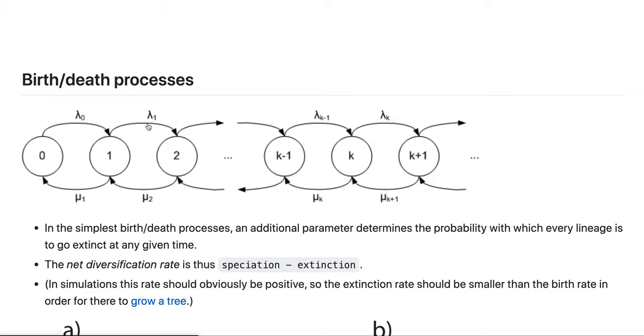It kind of makes sense if the net diversification rate is positive, so there's more speciations than extinctions. Otherwise the tree just dies out, which I mean that also happens, but that's not that useful under many circumstances.